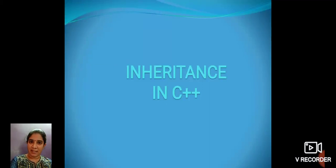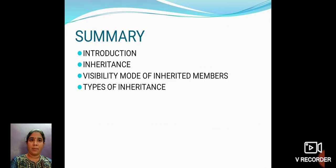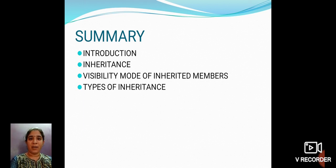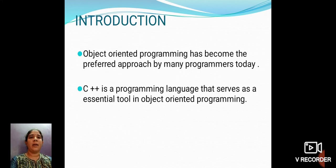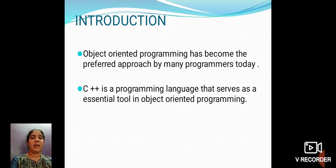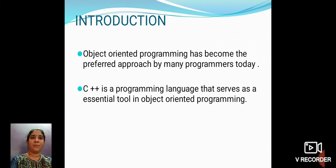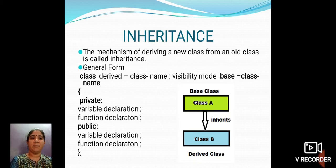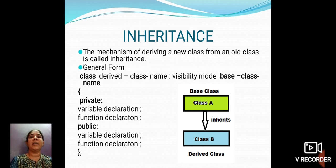Inheritance in C++. This video covers an introduction to inheritance, visibility mode of inherited members, and types of inheritance. Object-oriented programming has become the preferred approach by many programmers today. C++ is a programming language that serves as an essential tool in object-oriented programming. The mechanism of deriving a new class from an old class is called inheritance.